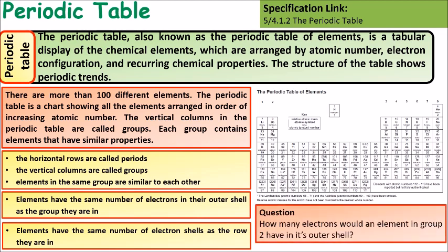If we think about the question: how many electrons would an element in group 2 have in its outer shell? Well because it's in group 2 it will have two electrons.